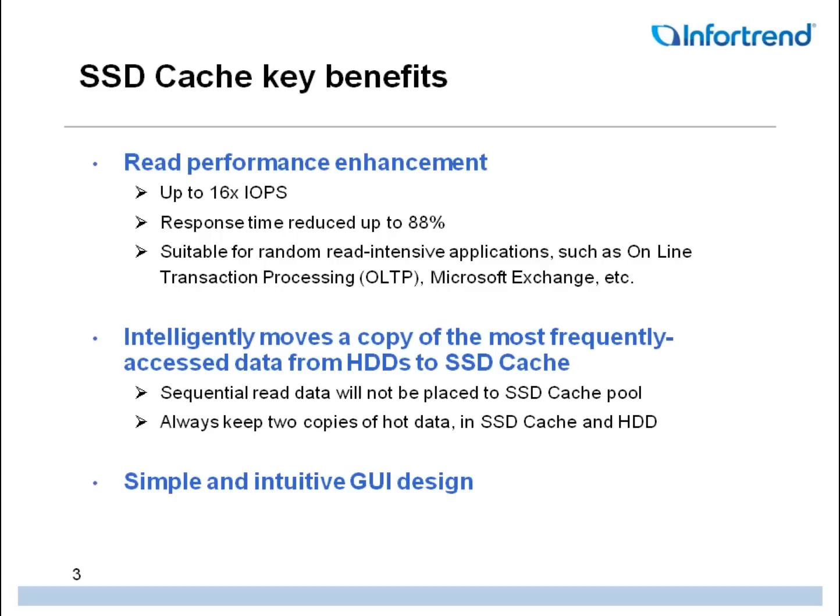SSDs have clear advantages over spin drives in terms of read speeds and lower response time or latency. With SSD cache, systems have access to as much as 16 times more IOPS when reading data from the cache pool. Additionally, compared to spin drive caches, SSD cache offers up to 88% savings in response time.